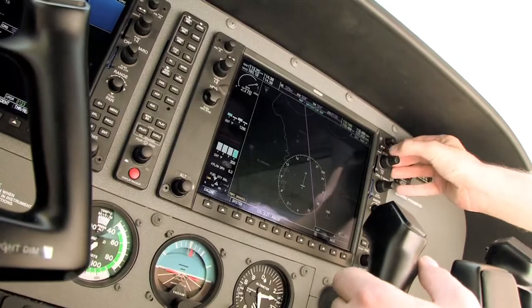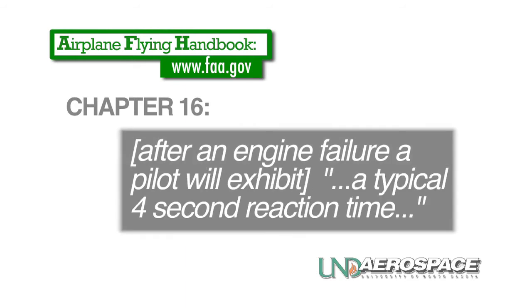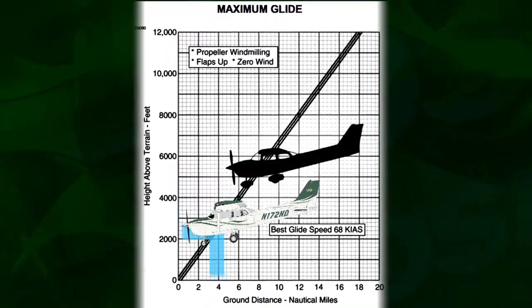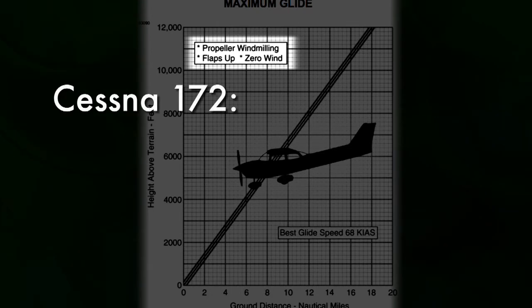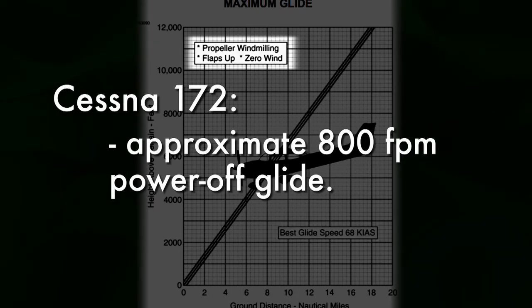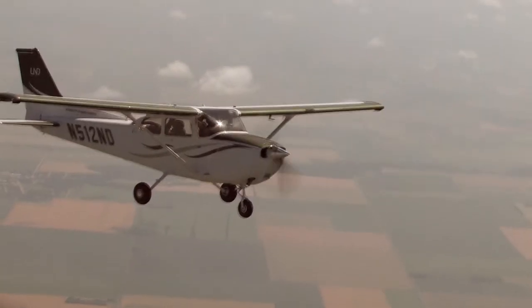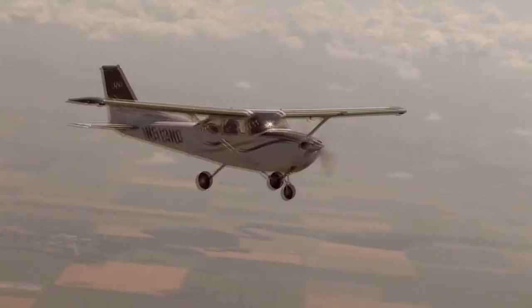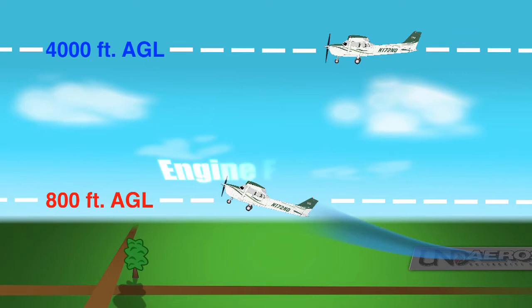According to Chapter 16 in the FAA's Airplane Flying Handbook, you can assume that from the point of engine failure, the average pilot reaction time will be about 4 seconds. The maximum glide chart in Chapter 3 of the Cessna 172 POH shows that a 172 with a windmilling propeller and flaps up will maintain a gliding descent at approximately 800 feet per minute, as long as the pilot maintains the best glide speed of 68 knots. An engine failure can occur at any infinite combination of altitudes and airspeeds. How we address the engine failure will be determined by whether the failure occurs at a higher or lower altitude.